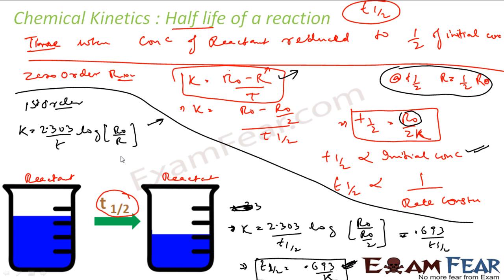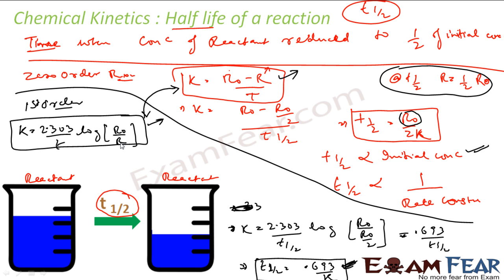If you remember the first-order rate formula K = (2.303 / T) × log(R₀ / R), you can derive T½ = 0.693 / K in one step. The two most important formulas to remember are: K = (R₀ − R) / T for zero order, and K = (2.303 / T) × log(R₀ / R) for first order.